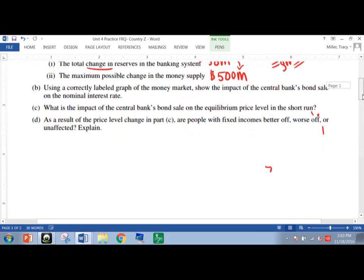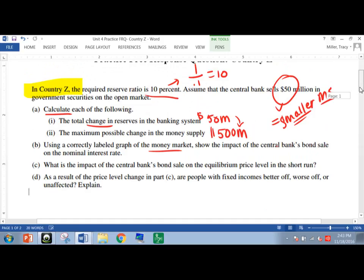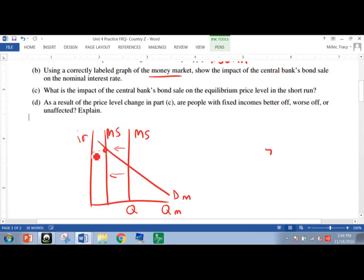Part B, using a correctly labeled graph of the money market, show the impact of the central bank's bond sale on the nominal interest rate. When you see nominal interest rate, it should be a little flag to you that says money market graph. We already know from the beginning that we want a smaller money supply because the bank is selling $50 million. Not often do we get a free response question where we're moving the money supply to the left. But it happens. So the money supply is going to shift to the left. The interest rate is going to be increasing. And let's throw a little nominal in there at the top as a caption.